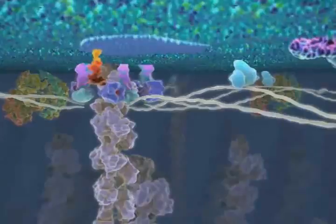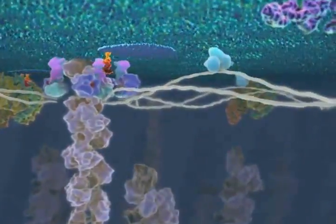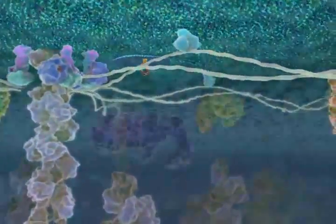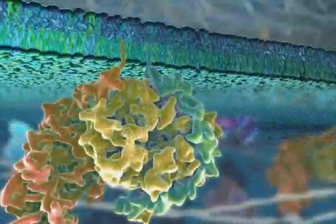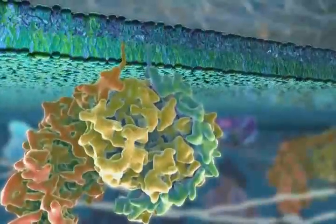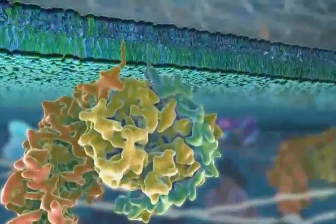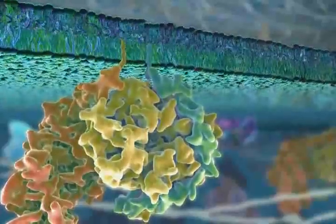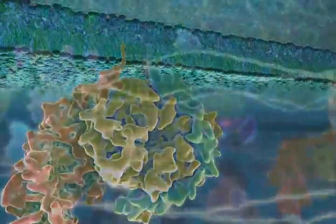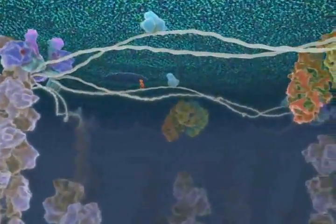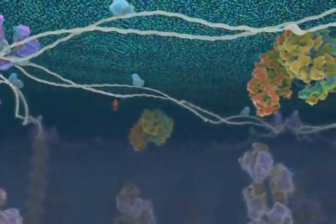The inner leaflet of the bilayer has a very different composition than that of the outer leaflet. While some proteins traverse the membrane, others are either anchored into the inner leaflet by covalently attached fatty acid chains or are recruited through non-covalent interactions with membrane proteins. The membrane-bound protein complexes are critical for the transmission of signals across the plasma membrane.